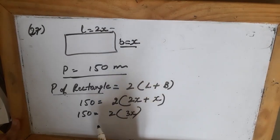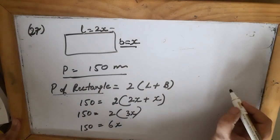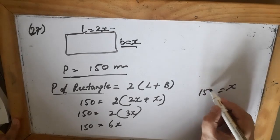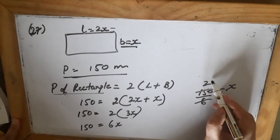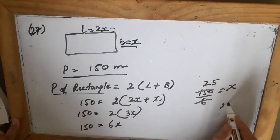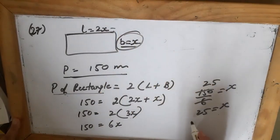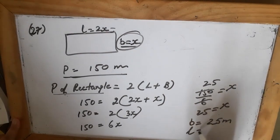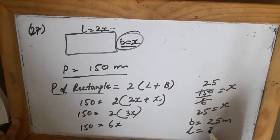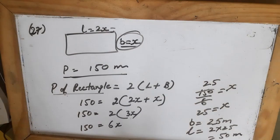The perimeter is 150 meters, so 2(2x plus x) equals 150. Both are x terms so 2x plus x equals 3x, and 2 multiplied by 3x gives 6x equals 150. So x equals 25. Therefore the breadth is 25 meters and the length is 2x equals 50 meters.